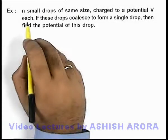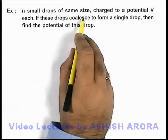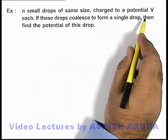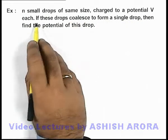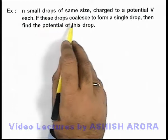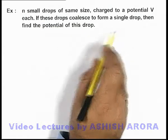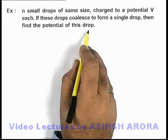In this example, we are given that n small drops of the same size are charged to a potential V each. If these drops coalesce to form a single drop, then we are required to find the potential of this single drop.